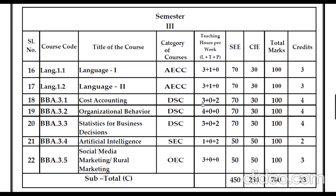In the third semester there will again be two languages. Up to the fourth semester, the student has to study two languages. The three discipline core subjects in the third semester are Cost Accounting, Organizational Behavior, and Statistics for Business Decisions. One skill enhancement is Artificial Intelligence, and one open elective is Social Media Marketing or Rural Marketing.